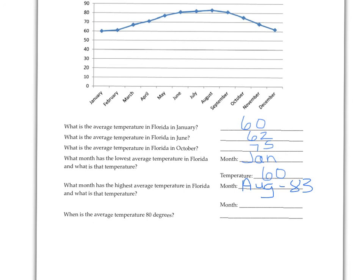When is the average temperature 80 degrees? Here we're going to look for 80 degrees and follow this over. It looks like this month, which is June, and this month, which is September, both hit an average temperature of 80 degrees. So we'll say June and September.